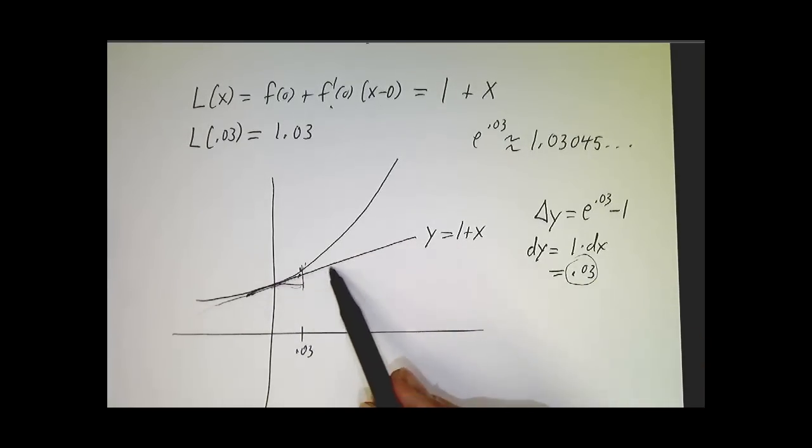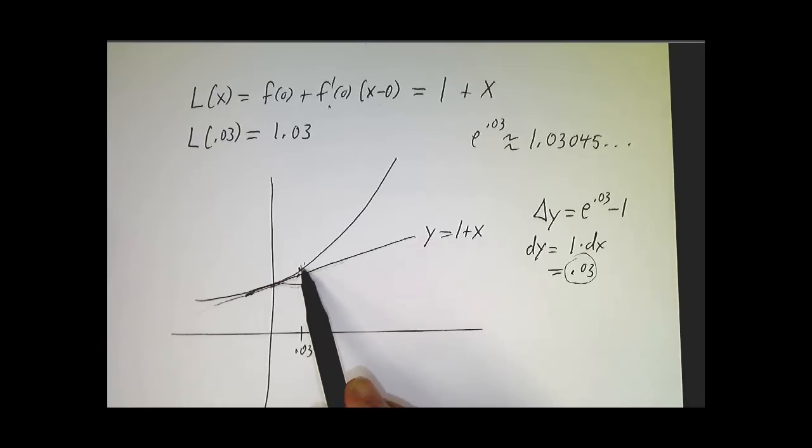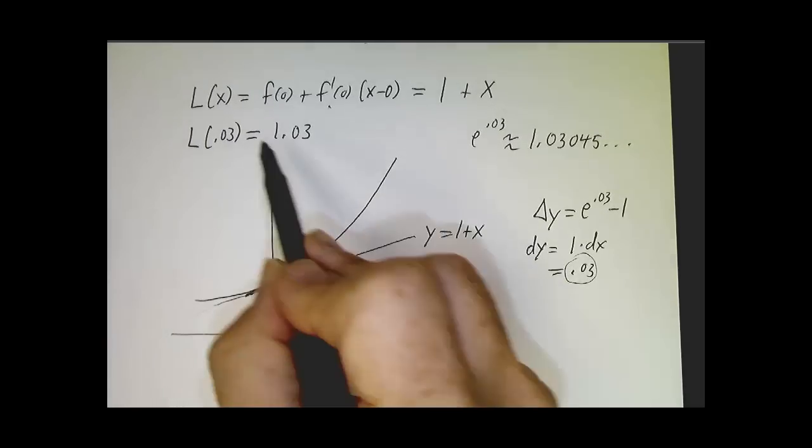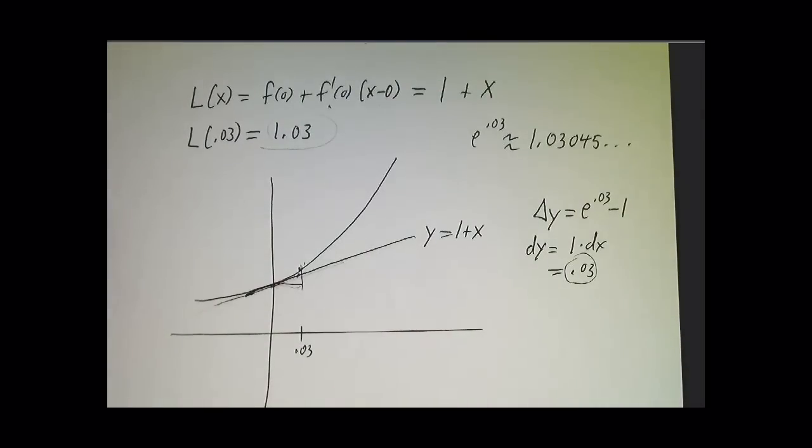If we're going up at a rate 1, then when we go across by 0.03, we go up by 0.03. We get a very good approximation to e to the 0.03.